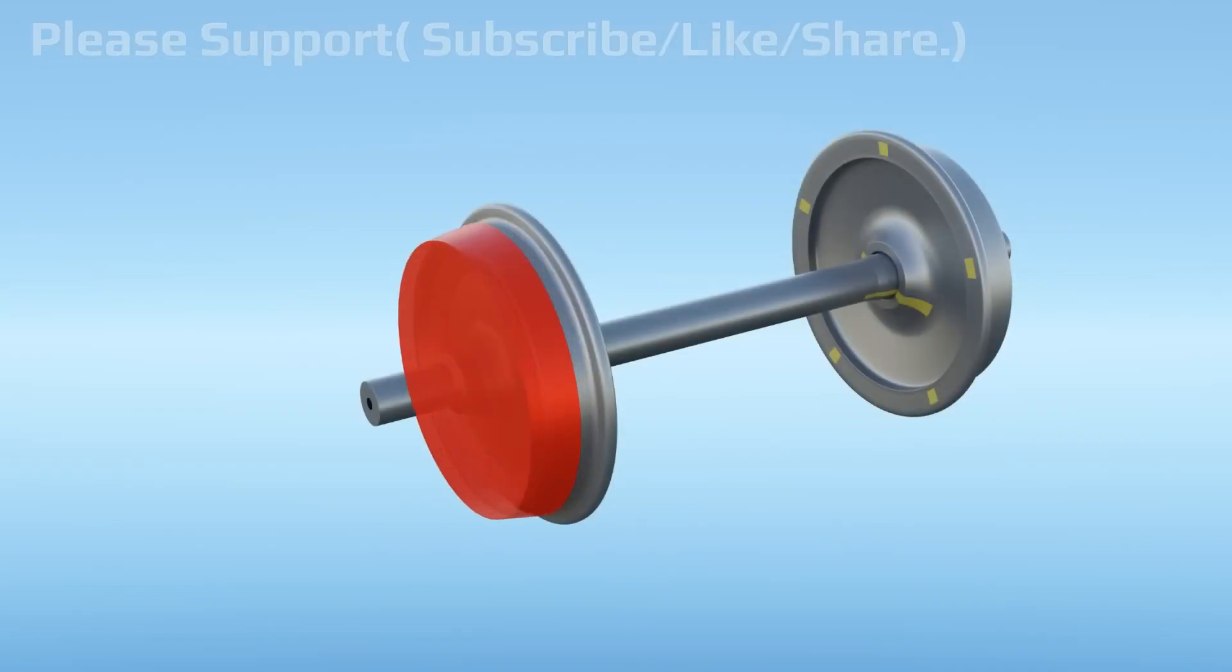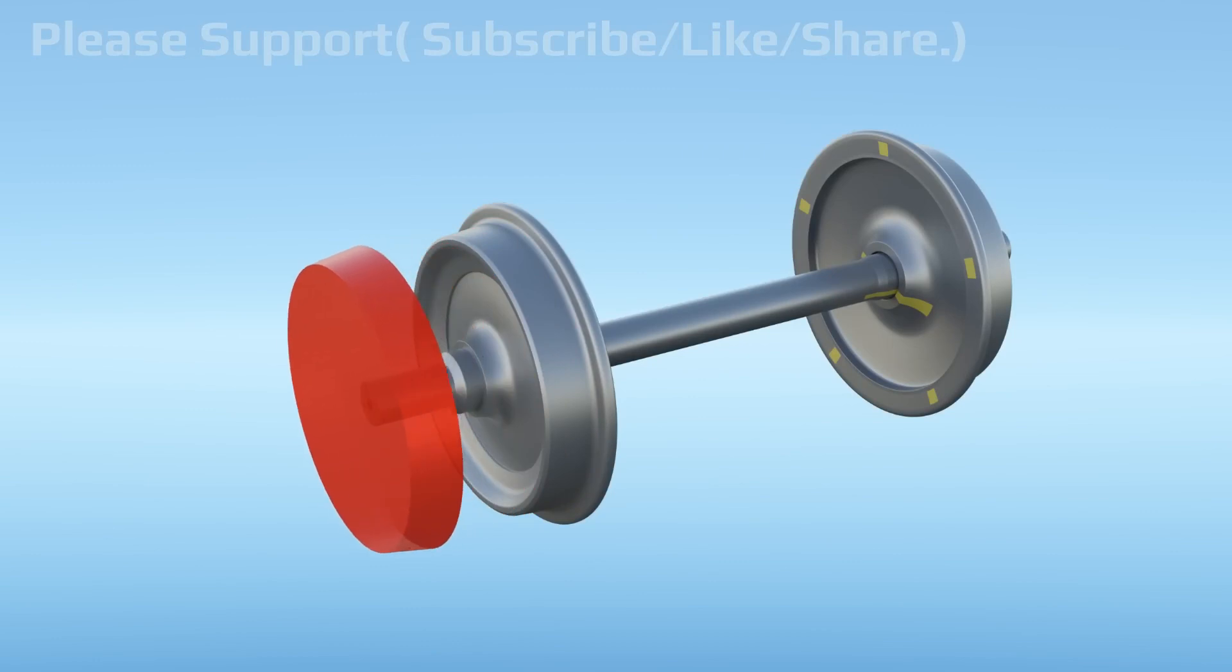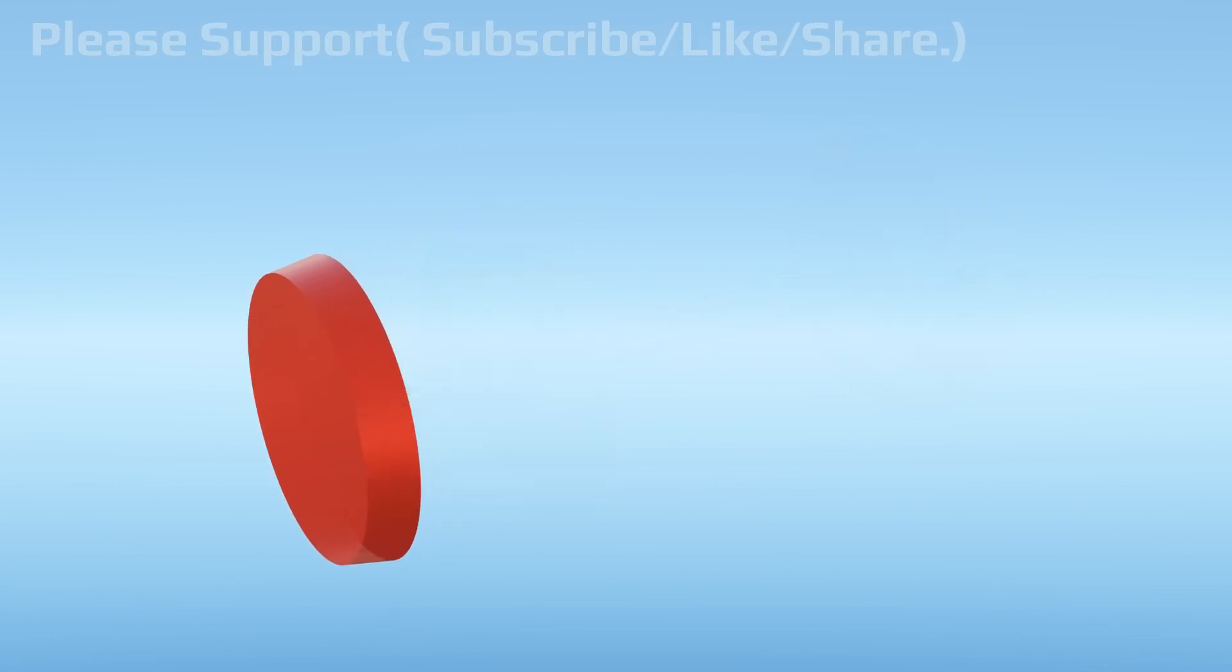That's why rail wheels are not cylindrical in shape. Rail wheels' outer tread section is slightly semi-conical.